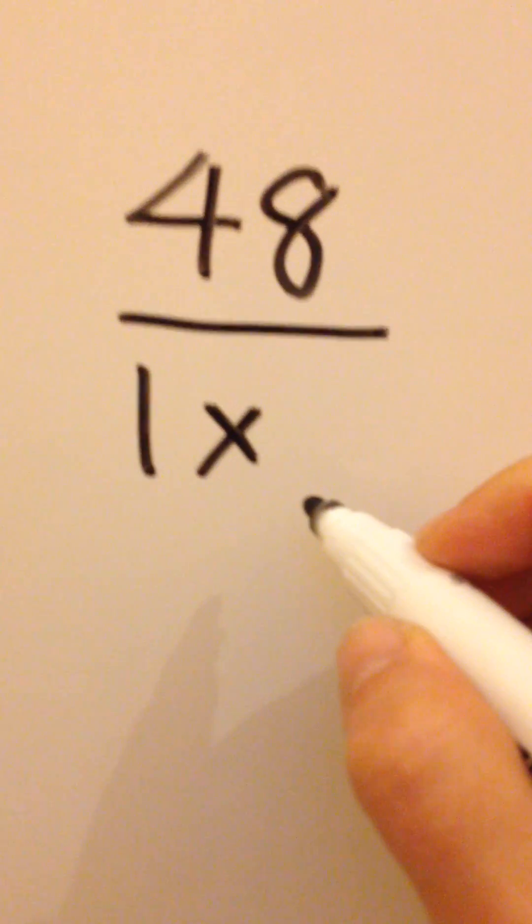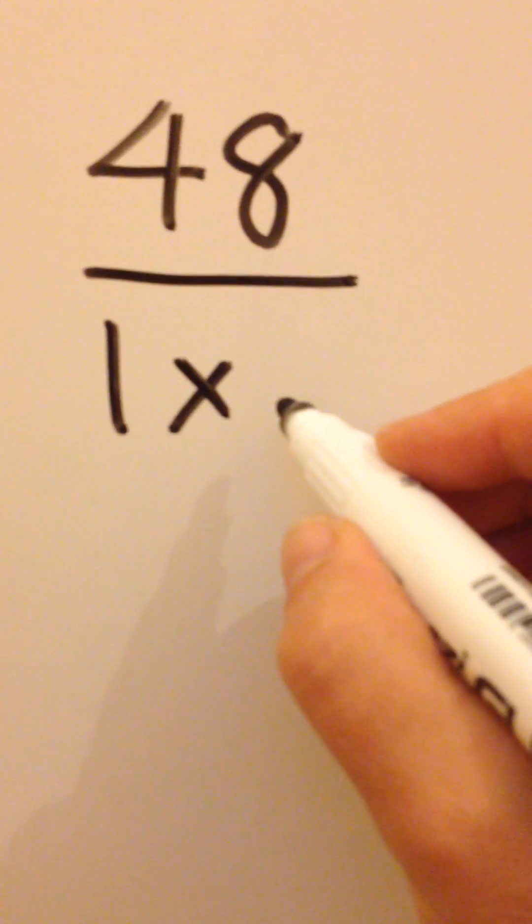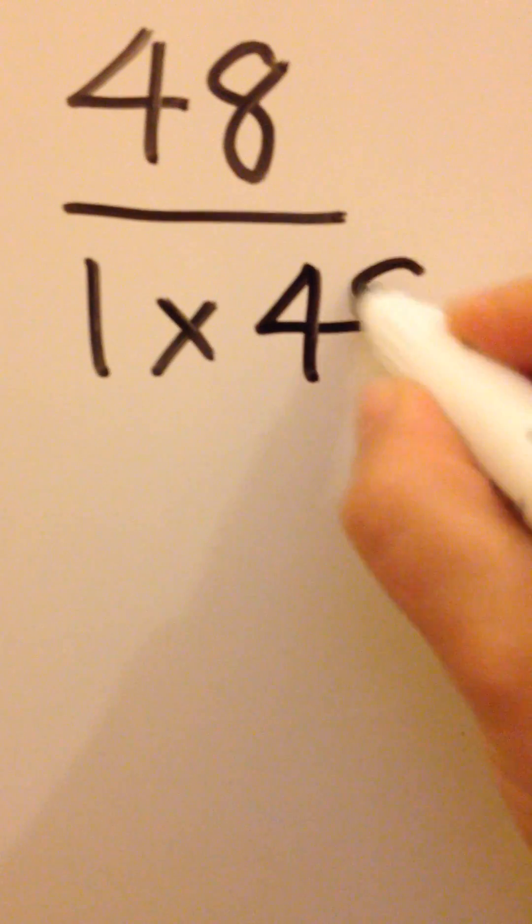Start with 1 times. 1 is a factor of all whole numbers. And 1 times what makes 48? It would be 48.